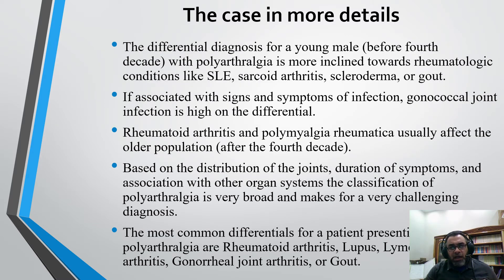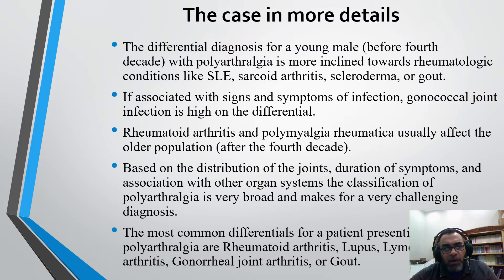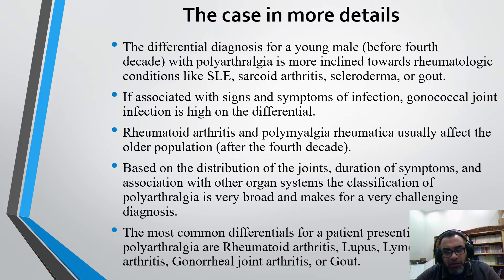The differential diagnosis of a young male before the fourth decade with polyarthralgia is more inclined toward rheumatologic conditions like SLE, sarcoid arthritis, scleroderma, or gout. If associated with signs and symptoms of infection, septic joint infection is high on the differential.